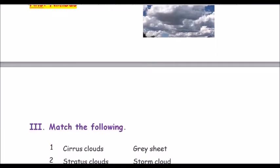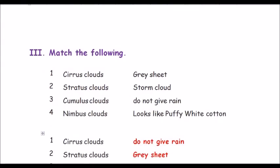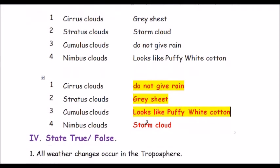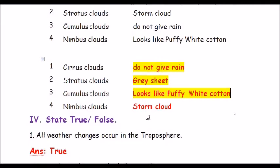Now let us move to match the following. Question one: Sea breeze — gray sheet. Question two: Stratus clouds — storm cloud. Question three: Cumulus clouds — looks like puffy white cotton. Question four: Nimbus clouds — storm cloud. Cumulus clouds look like puffy white cotton, and nimbus clouds are storm clouds.